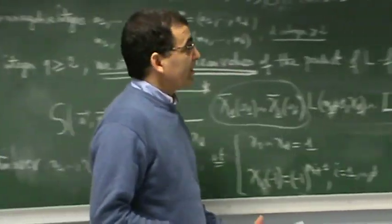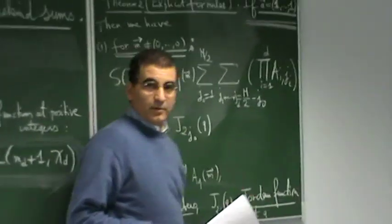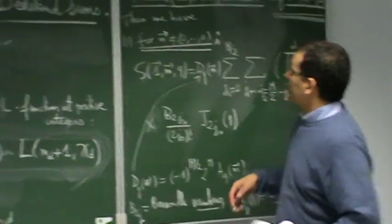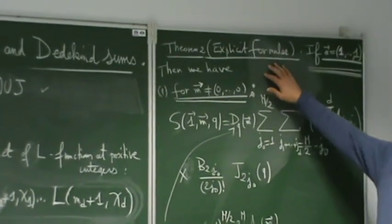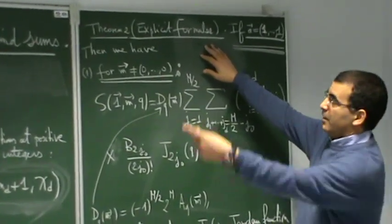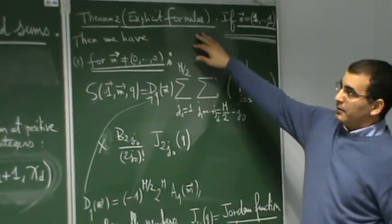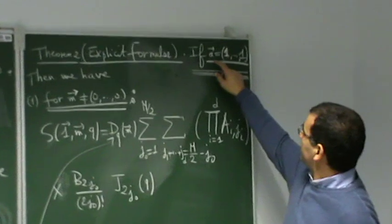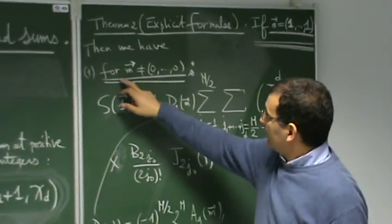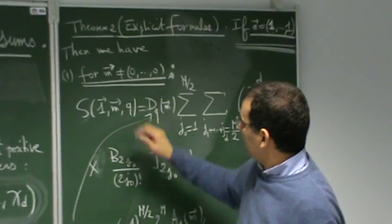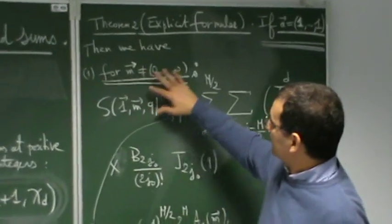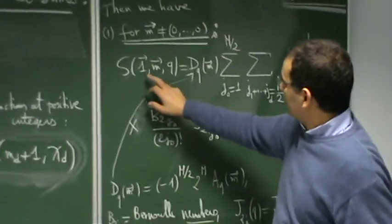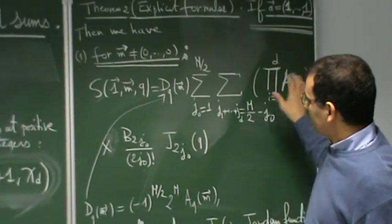And the second main result of this paper is to give explicit formula coming from the closed one. If the vector E is exactly one, so we have explicit formula. If the vector M is not zero, so we have this explicit formula.